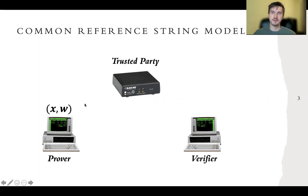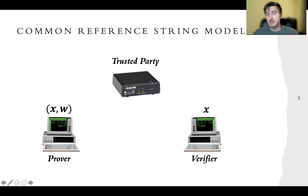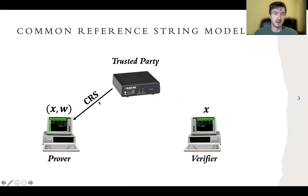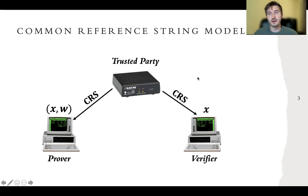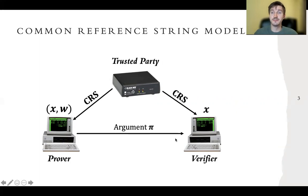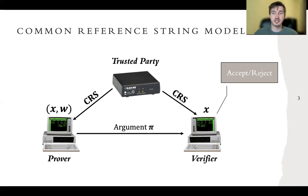The prover knows the statement and witness, and the verifier knows only the statement. At the beginning of the protocol, the trusted party will generate what we call a common reference string — a bit string from some very specific distribution — and gives this to both the prover and the verifier. The prover can use this to construct an argument, and the verifier can use this to either accept or reject the argument.